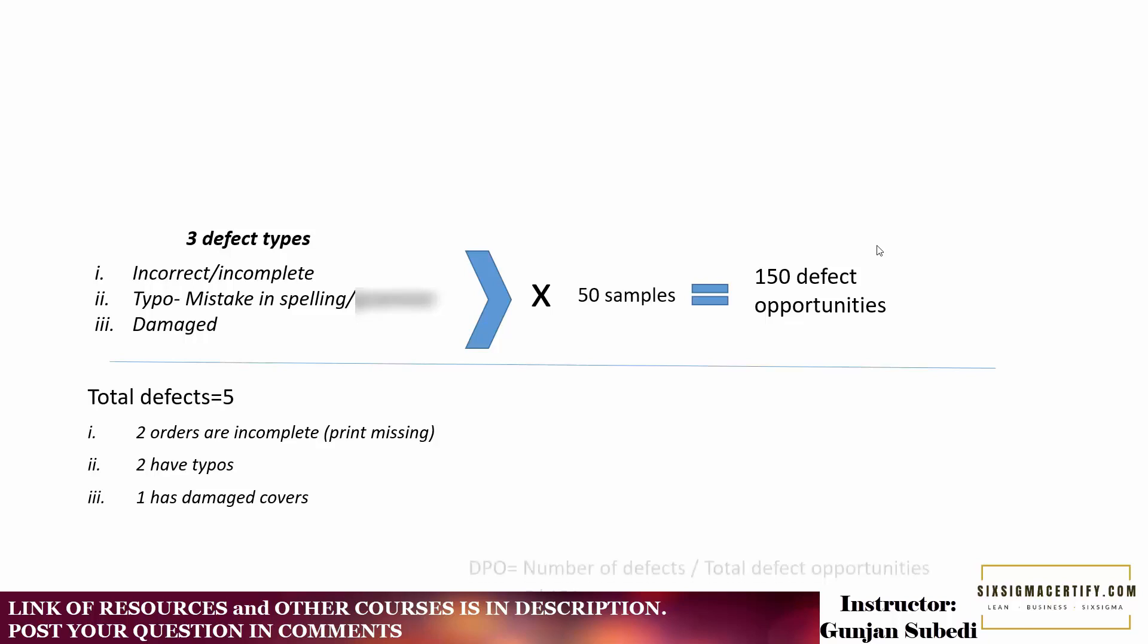Now if you found five defects out of these 150 defect opportunities - two incomplete, two having typos, and one having the damaged cover - then your defect per opportunities is the ratio of number of defects divided by total number of defect opportunities, which is 150. So 5 divided by 150 gives us 0.033.